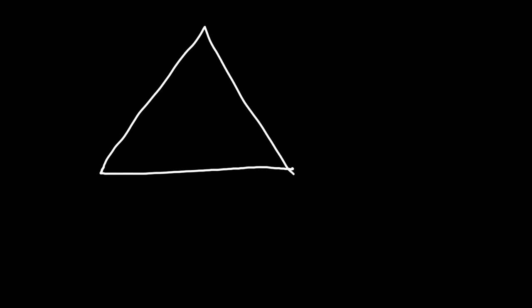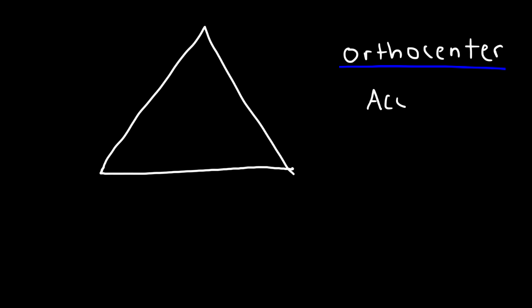Now let's focus on identifying the orthocenter of a triangle. The orthocenter doesn't have to lie inside of the triangle — it could be on the triangle or outside of it. If we have an acute triangle, it's going to lie inside. If we have a right triangle, it lies on the triangle. And if we have an obtuse triangle, it's going to lie outside.